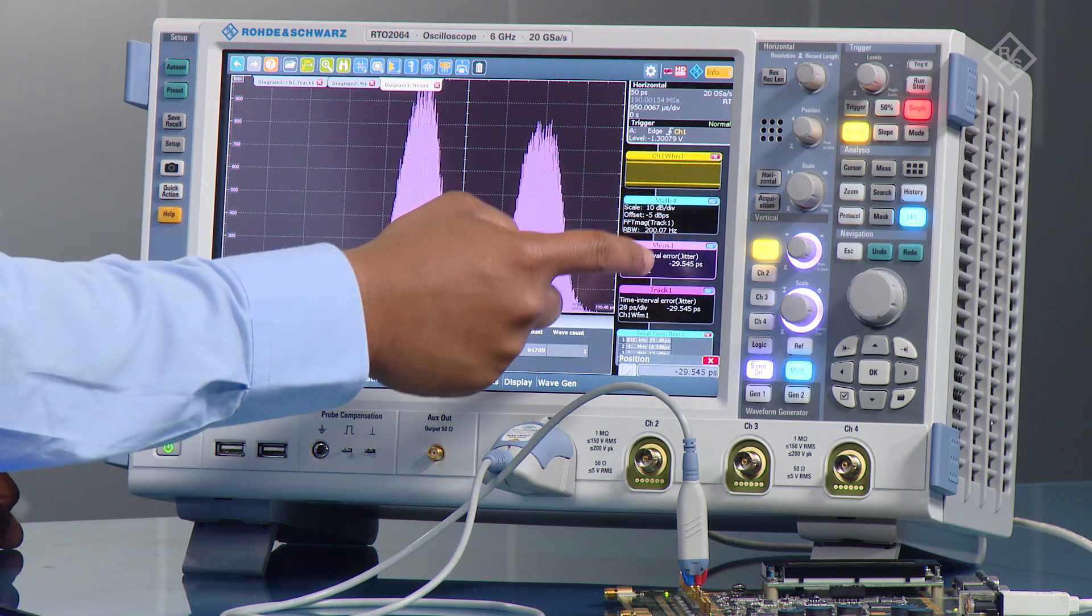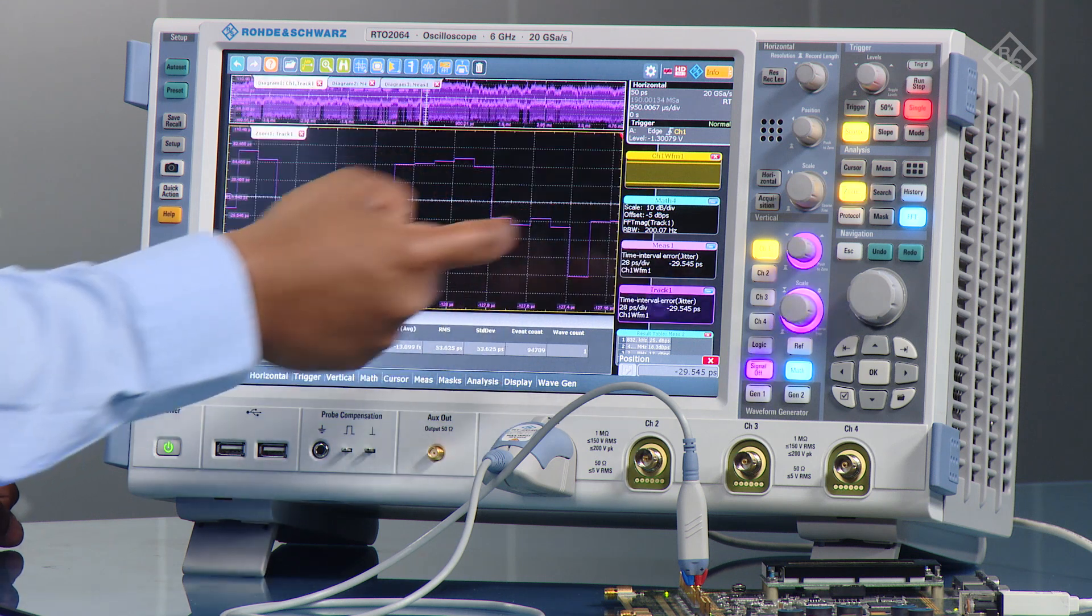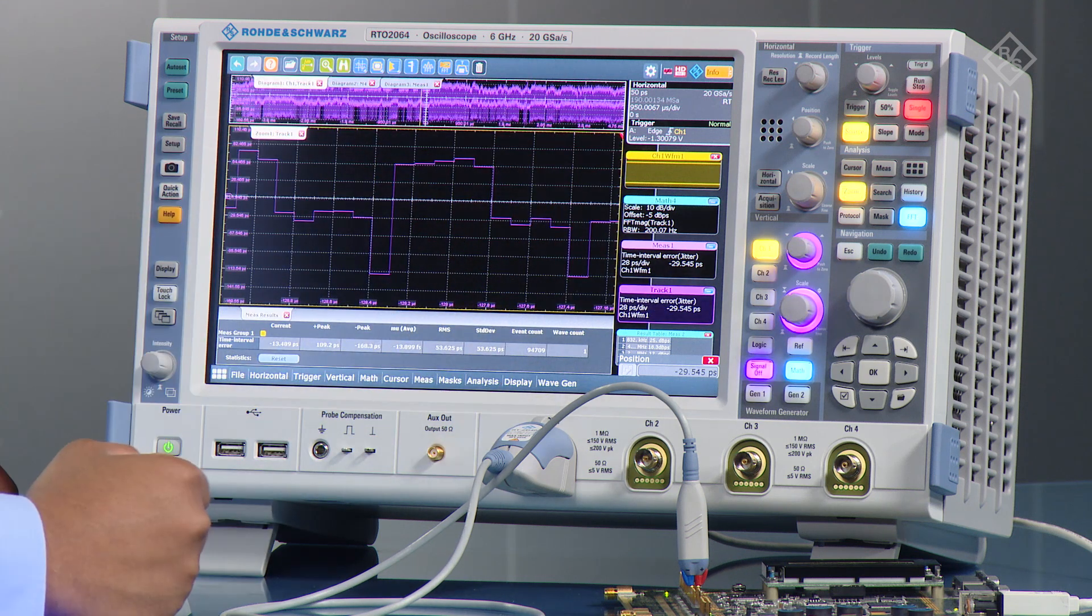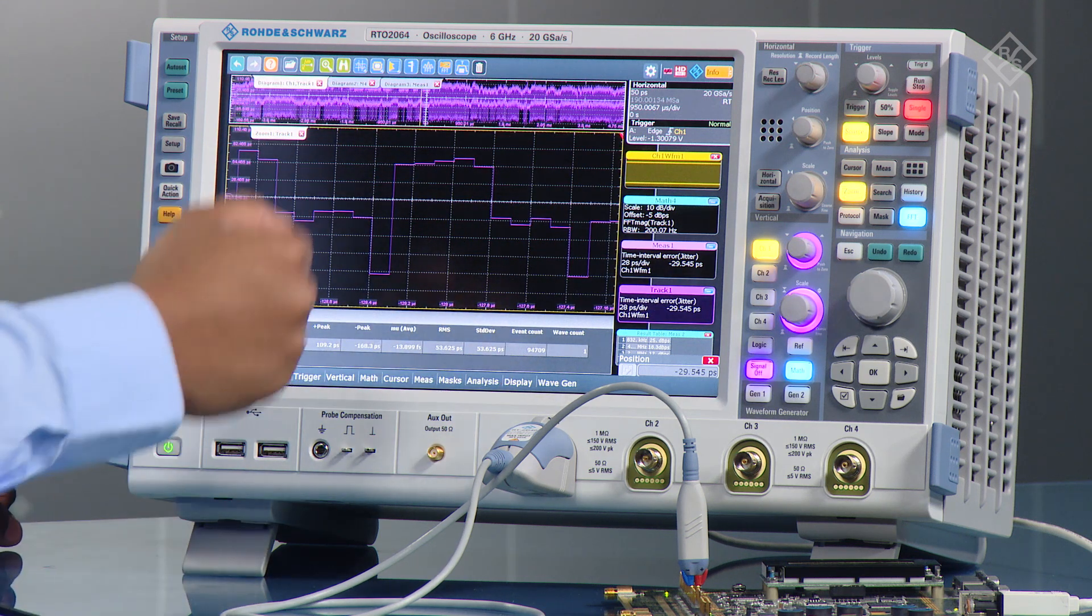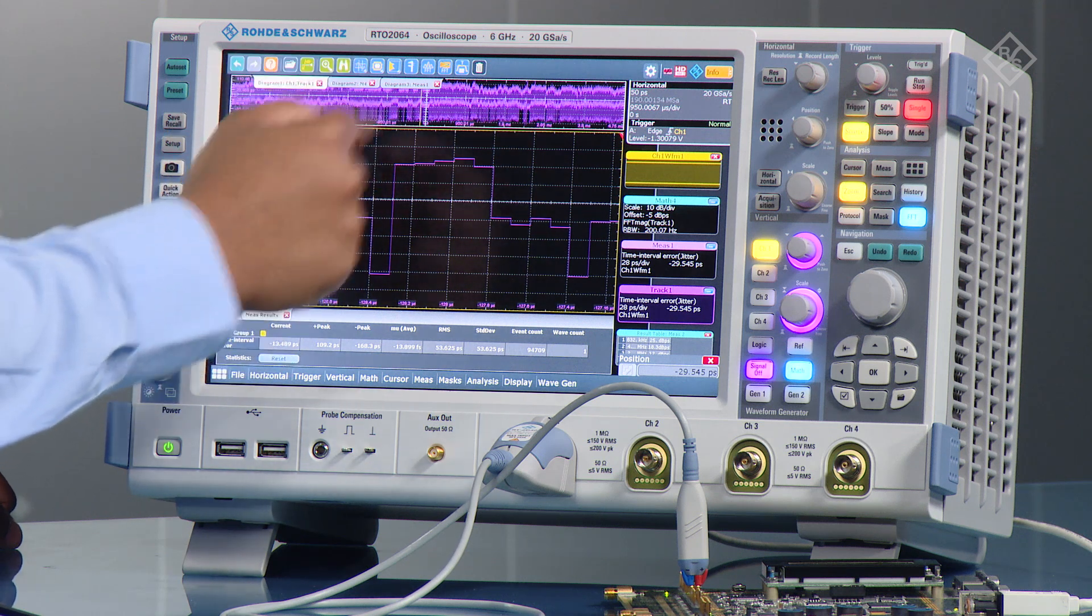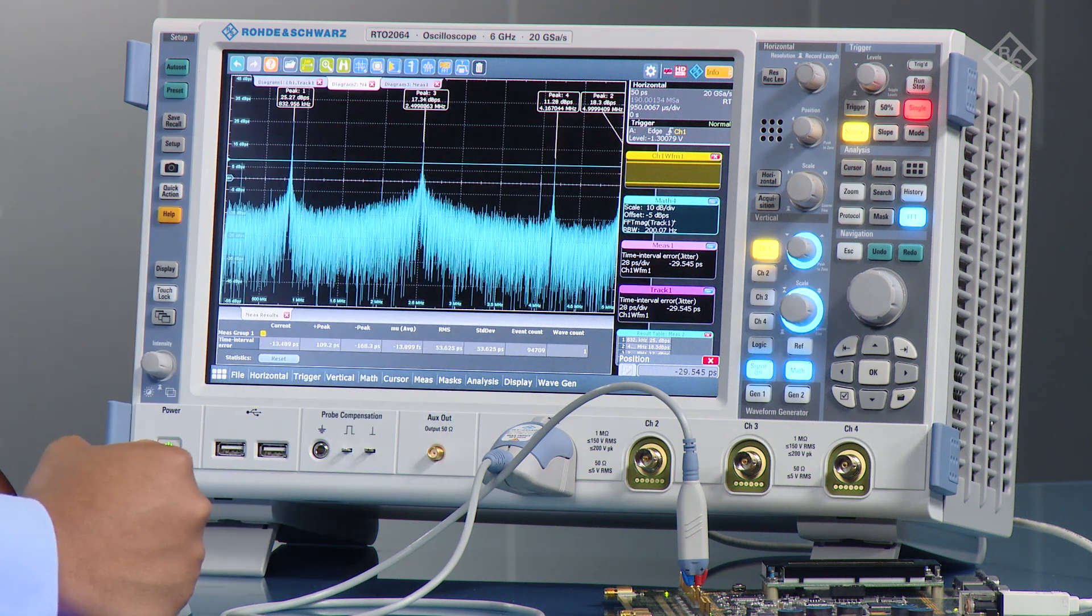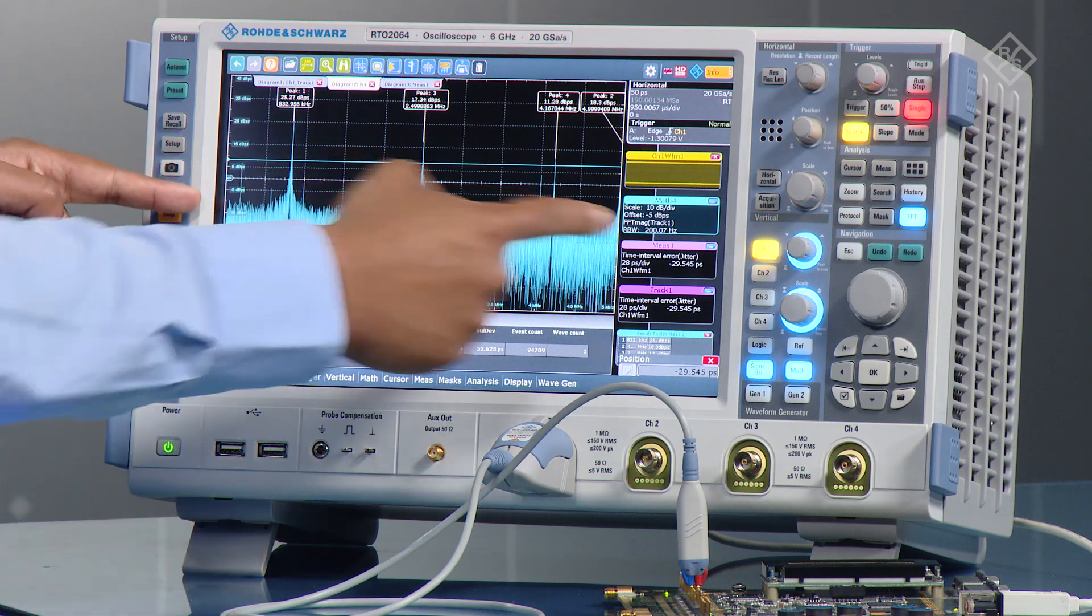So from the TIE measurements we could see there is this definite disturbance and what we can do is do an FFT or a spectrum measurement on that TIE. So that's been displayed here and you see that in this display.